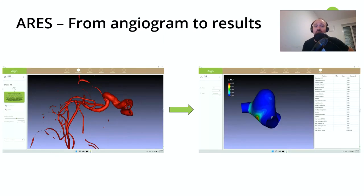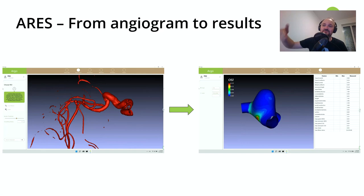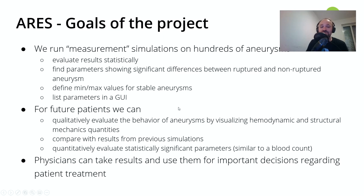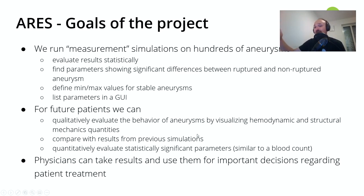We want to be able to qualitatively visualize the behavior of these aneurysms, but we also plan to allow physicians to click through older simulation data. If a patient is followed for years and physicians perform these simulations annually, after five years the physician will have five time steps and can click through the development of an aneurysm over time, visualizing fluid dynamic and structural mechanics parameters, and see how — or whether — the aneurysm is changing. Quantitatively, we also want to apply the blood count analogy using our own parameters to give a quantitative definition of aneurysm behavior.